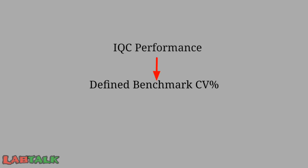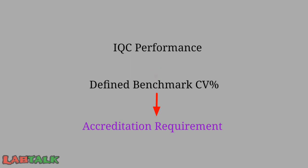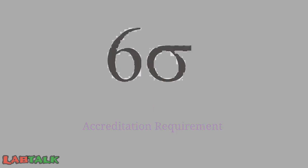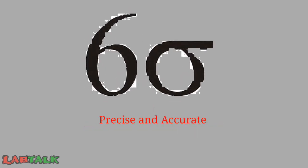Until now we have seen how to use a sigma matrix in internal quality control. In this lecture, we are going to see the measurement of uncertainty using the sigma matrix. Laboratory performance is generally measured in terms of CV percentage or measurement uncertainty for each parameter, which is an accreditation requirement and a parameter by which necessary actions can be taken to improve quality and provide more precise and accurate test results.